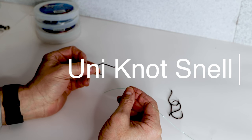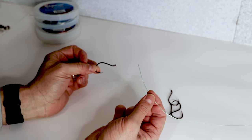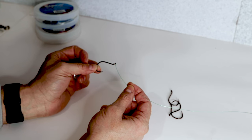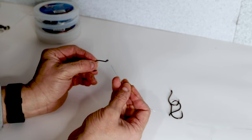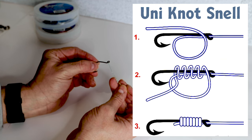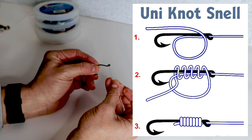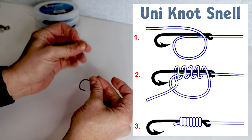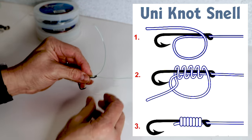Here's the more commonly used way of snelling. You're going to come in through the eye from the front of the hook, where the tip of the hook is. Make yourself a tag end through the loop, and bring that loop back up towards the eye.